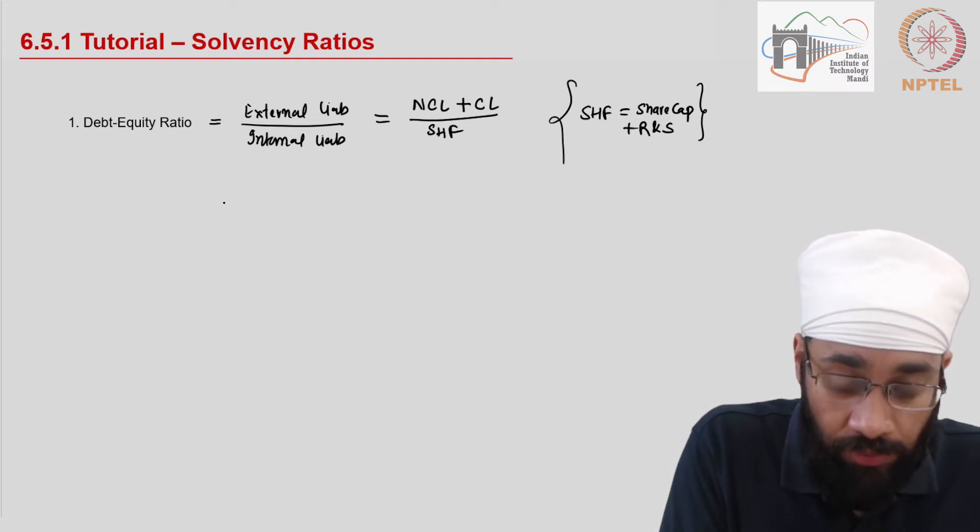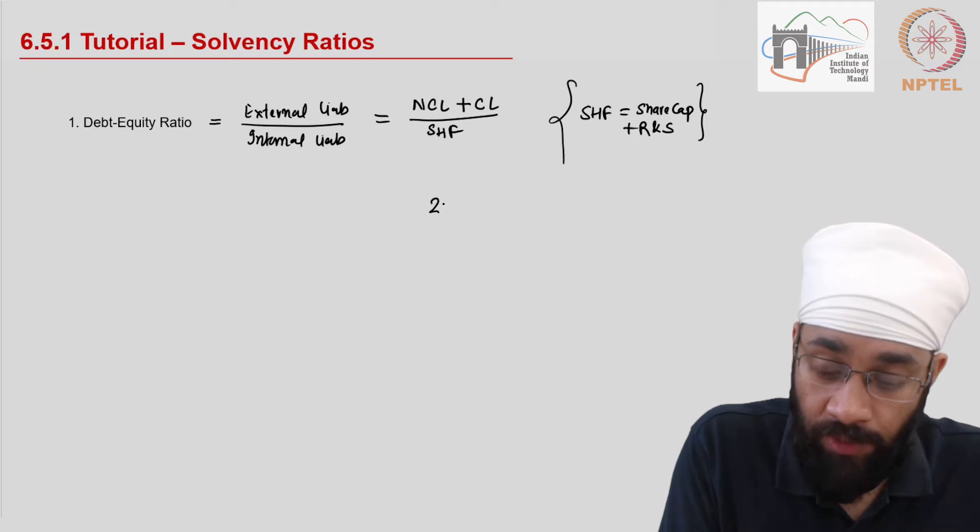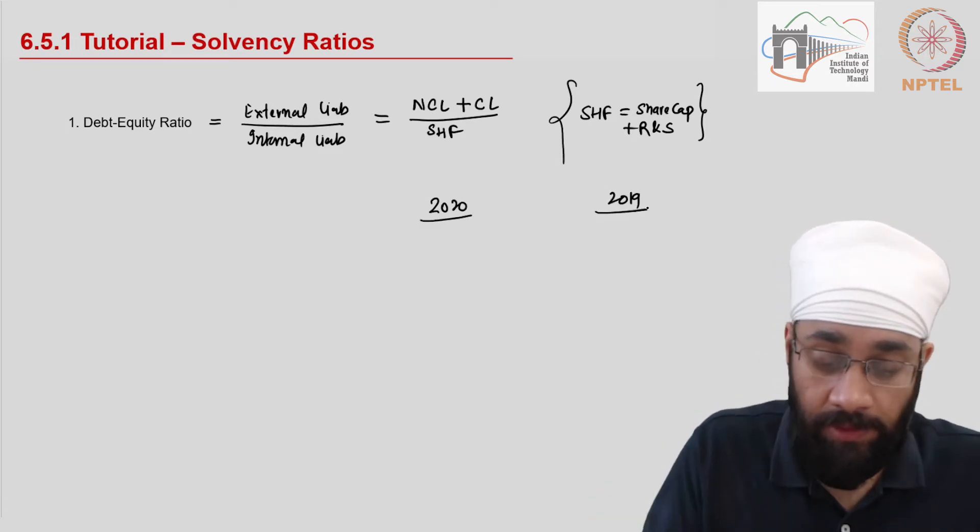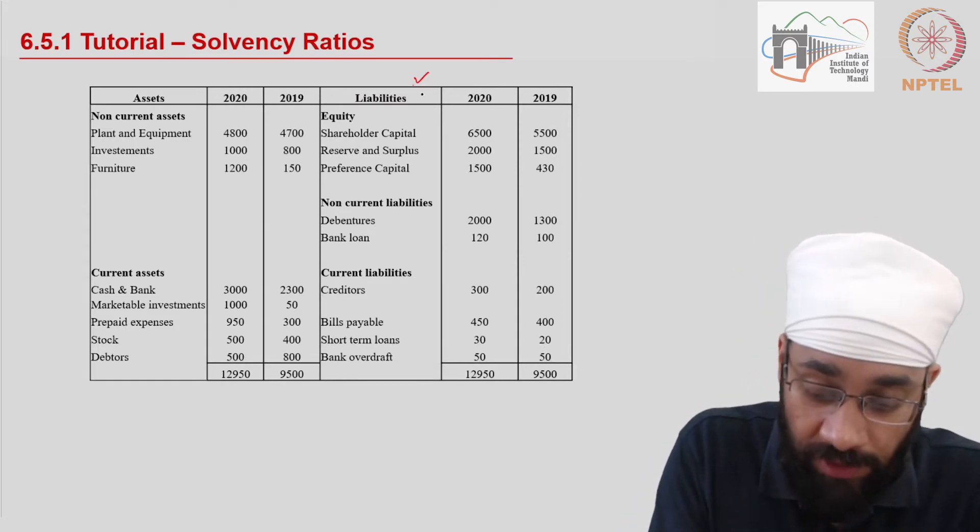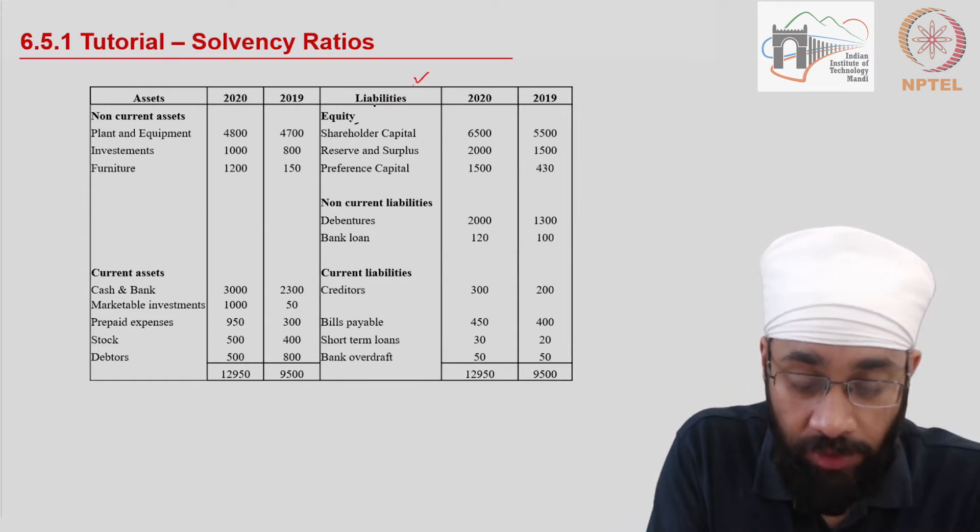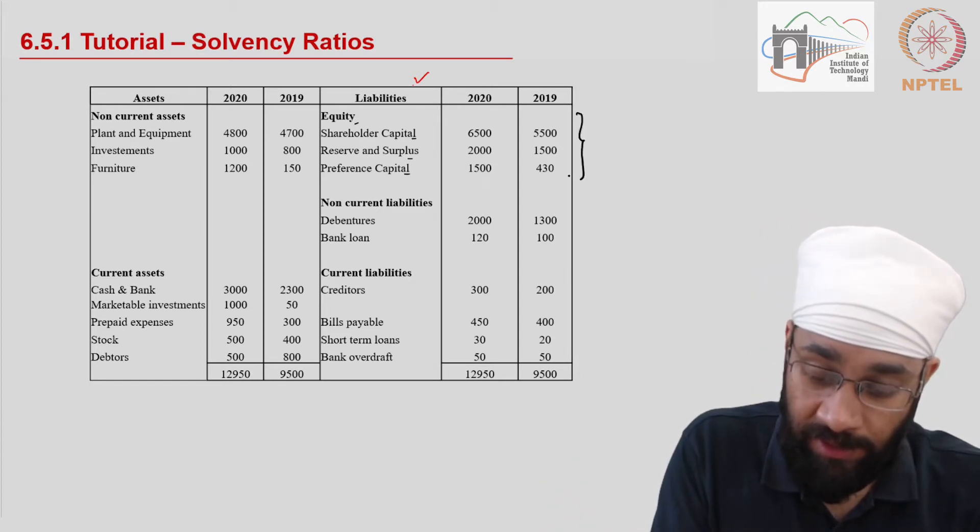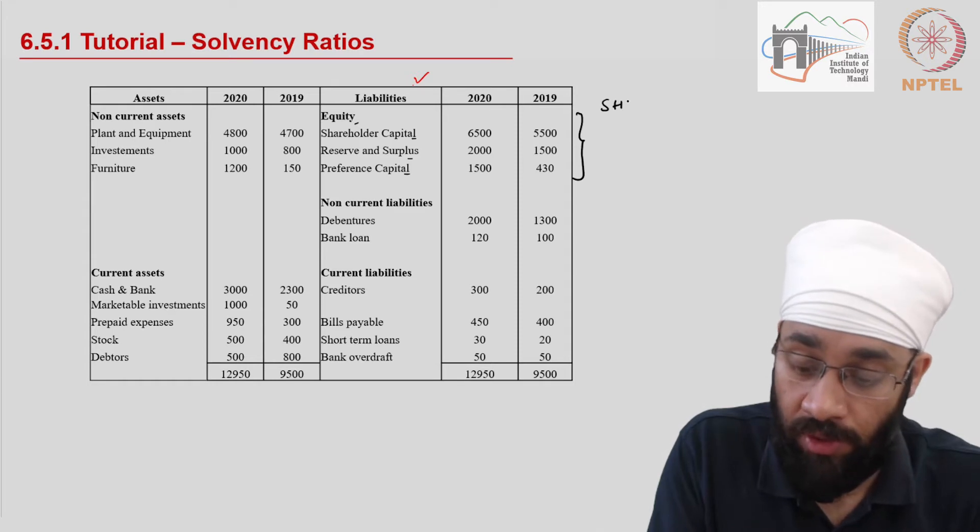Now all we need to do is go to the balance sheet and pick up these numbers, and we know that there are two years worth of data. So let us go to the balance sheet. In the balance sheet on the liability side we have equity section where you have shareholder capital, preference capital and reserves and surpluses. We know that this section represents the shareholders part.